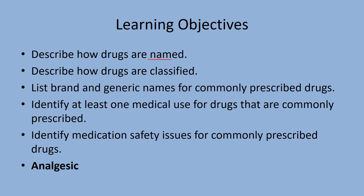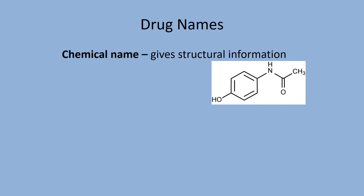We'll describe drug names and classifications, and take a look at common brand and generic names. In this part, we'll just do analgesics, or pain relievers. Chemical names give a drug specific structural information. For example, this molecule here — all the connections are in a particular way in and out of the plane. Its chemical name is N-acetyl para-aminophenol, which tells you all the different structural information of the compound. Every single thing tells you where things are connected. If you want that exact 3D structure, you give it the chemical name.